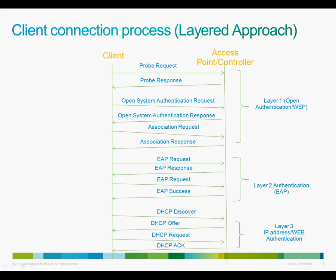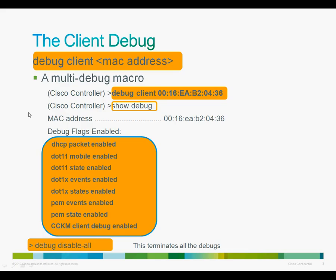This is a very simplistic high-level view of how the authentication process takes place at the different layers. To troubleshoot client issues, the single most important command is the debug client followed by the MAC address of the client in question. The command is actually a macro which packs together several debug commands. You can run this debug command for only one client at a time, so don't try to troubleshoot several clients at the same time. The debugs are not process intensive, so it should work in a production environment. If you expect the client to roam across multiple controllers, make sure you run this command across all the controllers simultaneously, and ideally you would want the controllers to be NTP time-synced.